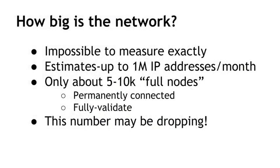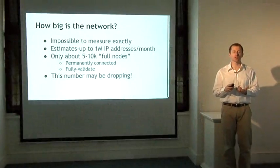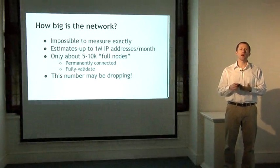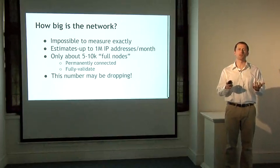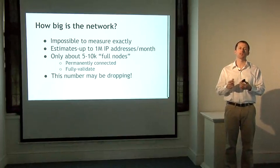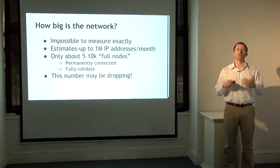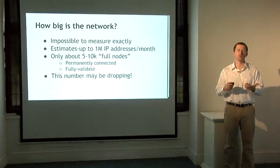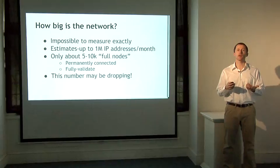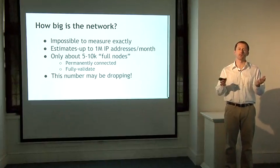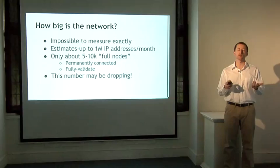How big is the Bitcoin network? There are no official statistics anywhere because there's no central authority overseeing it — it's simply whatever nodes are participating. A number of researchers have tried to come up with estimates. On the high end, some researchers have said that over a million IP addresses in a given month will at some point be running the Bitcoin protocol and acting at least temporarily as a Bitcoin node. But if you look at full nodes that are permanently connected and fully validating every transaction, it's only about five or ten thousand — which may be a surprisingly low number — and there's some concern that this number may actually be going down.